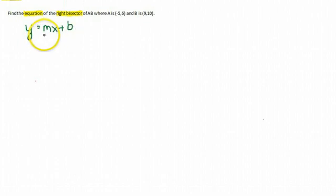So the problem essentially comes down to finding M and finding B. So a right bisector is a line that cuts a line segment in half, and it intersects at a 90 degree angle.